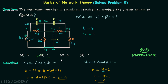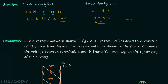Now consider a situation where the number of equations required for nodal analysis is 3 but for mesh analysis is 4. In that situation the answer would be 3, because we are required to find the minimum number of equations to analyze the circuit — it is not mentioned which particular method we have to use. So the answer will be whichever method gives fewer equations.